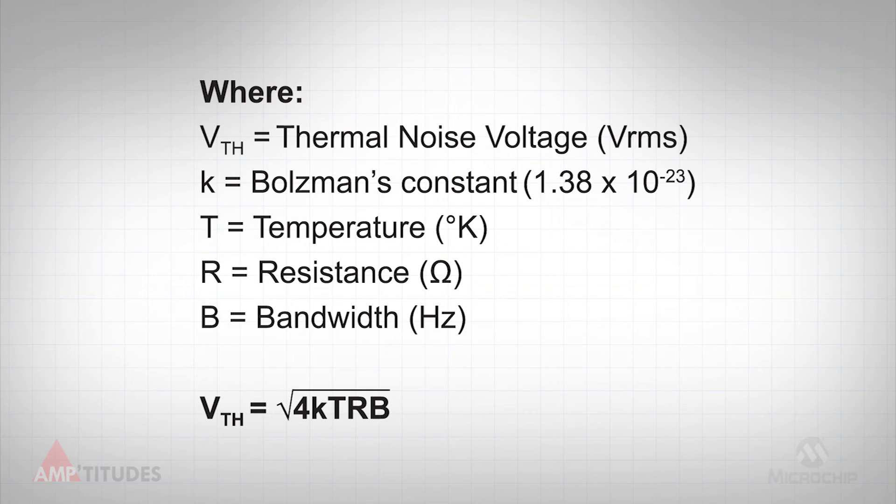Recall that the thermal noise voltage of a resistor is defined as shown here, where K is Boltzmann's constant, T is temperature, R is the resistance, and B is the bandwidth.